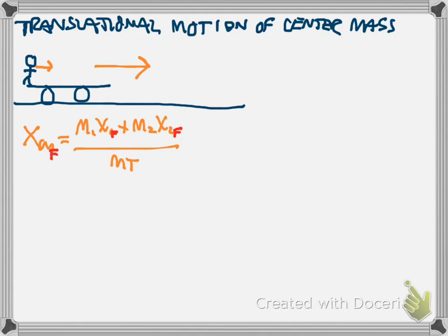And then we can use the same equation with the initial center of mass. So we could say that x center of mass initial equals m1 x1 initial plus m2 x2 initial all over the total mass.